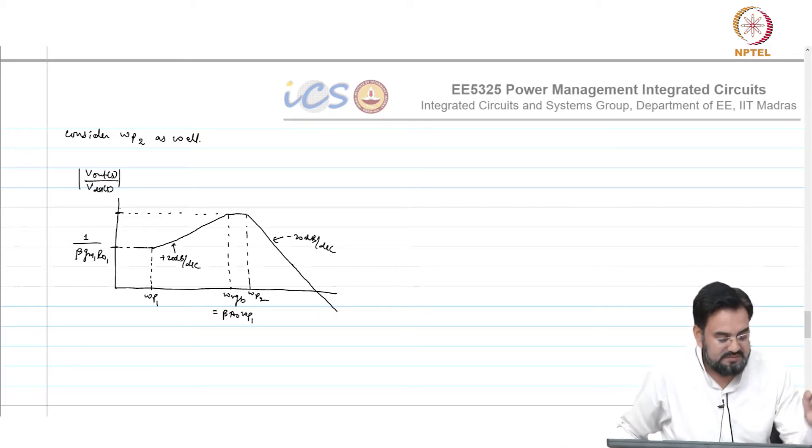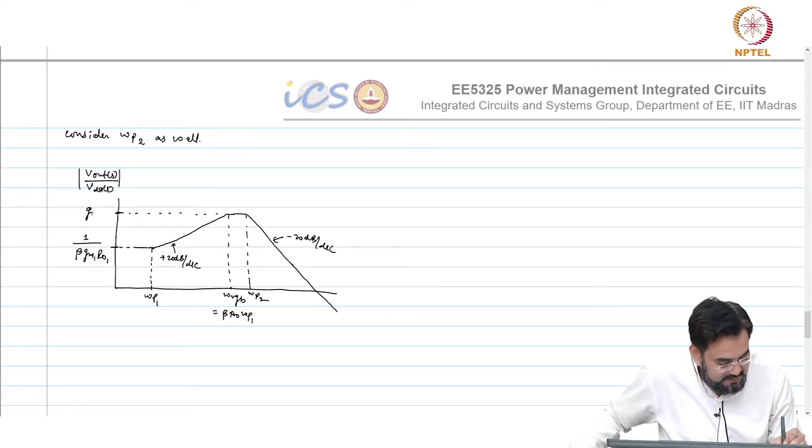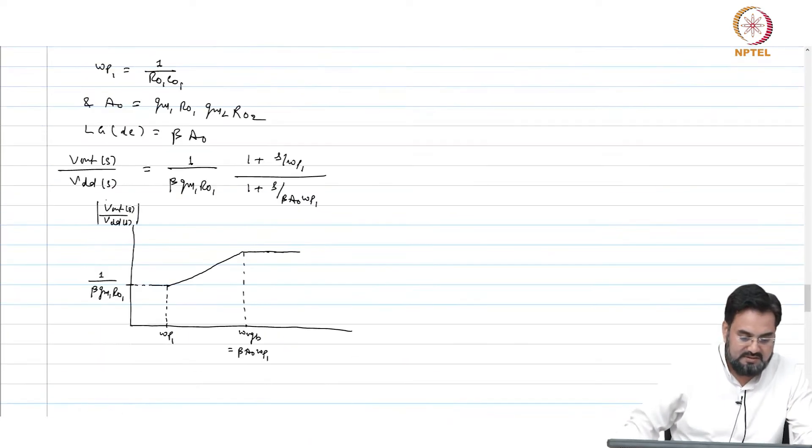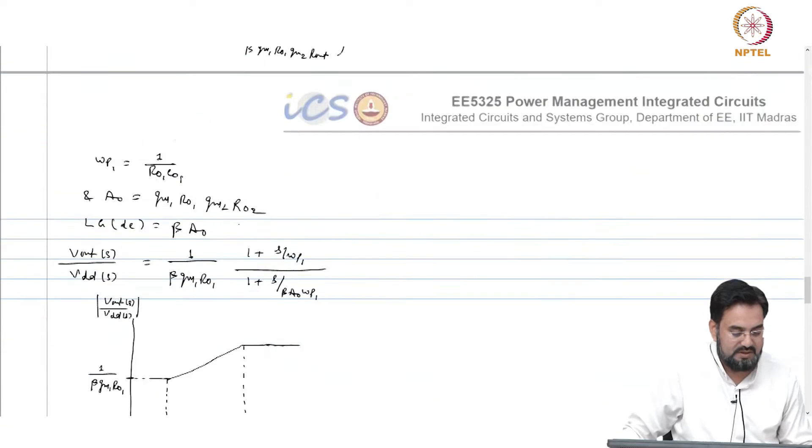What is the gain? This can anybody tell? Gm2 times r_out. Now go back to your circuit. At high frequency around UGB, this capacitor will get shorted to ground and now this is acting as a common gate amplifier. You have a gm of this and r_out, that is the gain, and that is why it will saturate at gm2 times r_out.